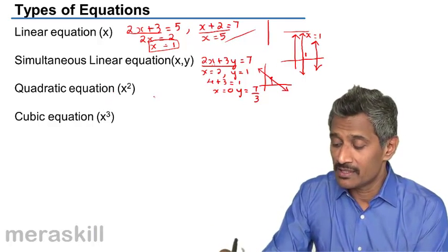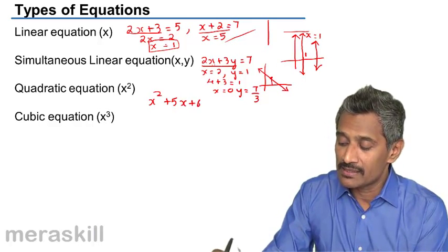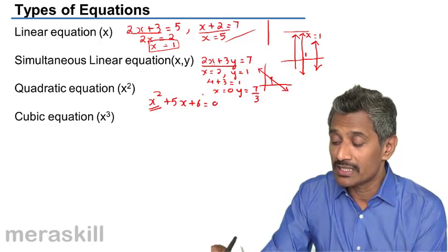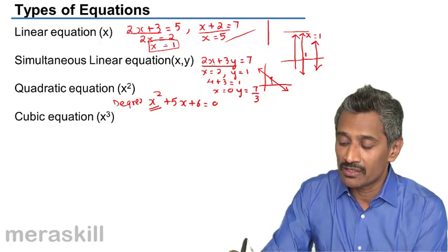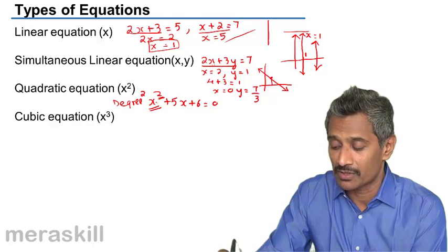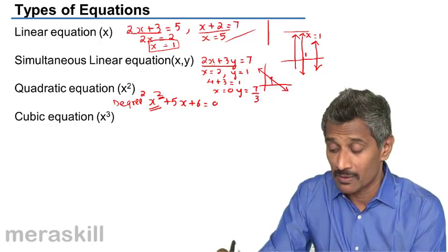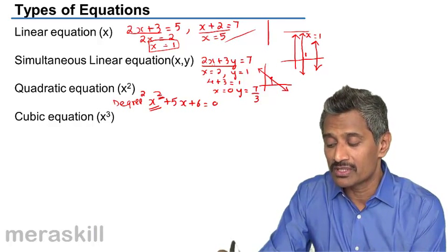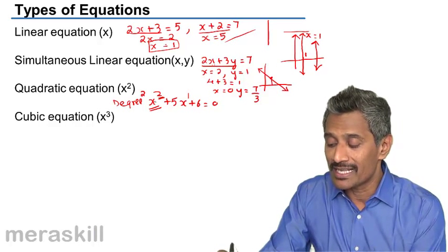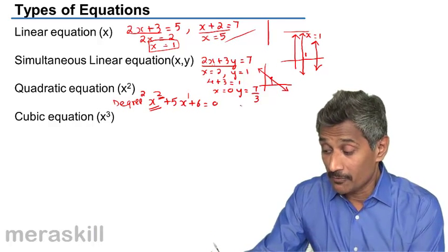Then we have quadratic equations, something like x squared plus 5x plus 6 equals 0. We call it a quadratic equation because it is of degree 2. Degree means the maximum exponent — the biggest power to which the variable has been raised. Here the maximum power is 2, so x squared plus 5x plus 6 is a quadratic equation.